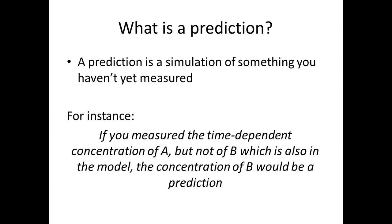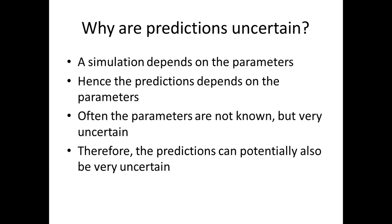First, let's understand what a prediction is. A prediction is simply a simulation of something that you haven't measured yet. For instance, if you have a model fitted to data for the time-dependent concentration of A, and this model also includes B but you have no data for B, then doing a simulation of B — seeing what its time dependency is — that would be a prediction.